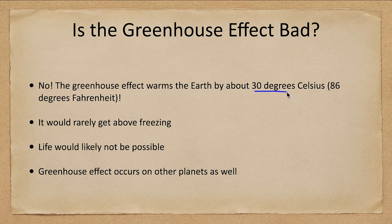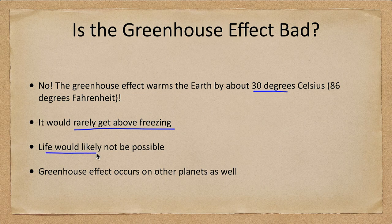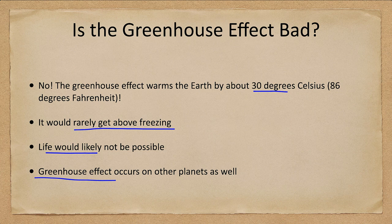The greenhouse effect warms the Earth by about 30 degrees Celsius, or 86 degrees Fahrenheit. Without it, temperatures would rarely get above freezing — everything except perhaps the equatorial regions would be completely frozen and life would not be possible. We also see the greenhouse effect occurring on other planets; when we talk about Venus we will see where it can run away.